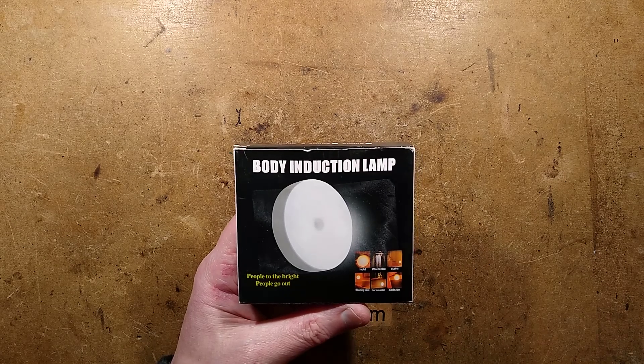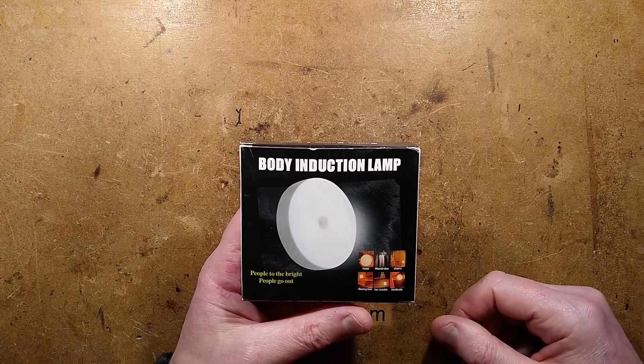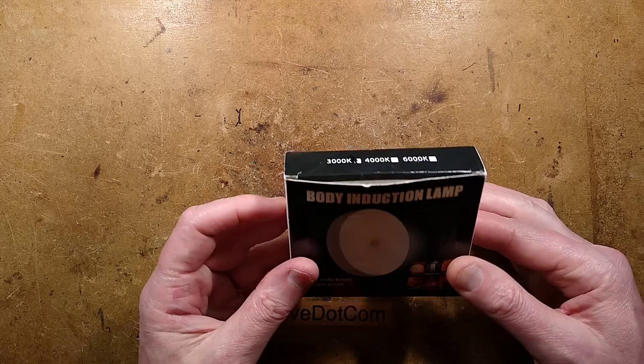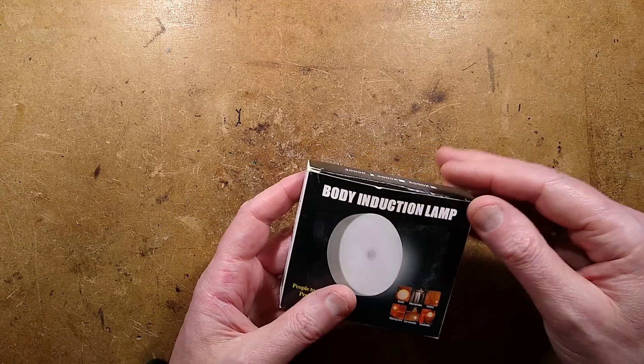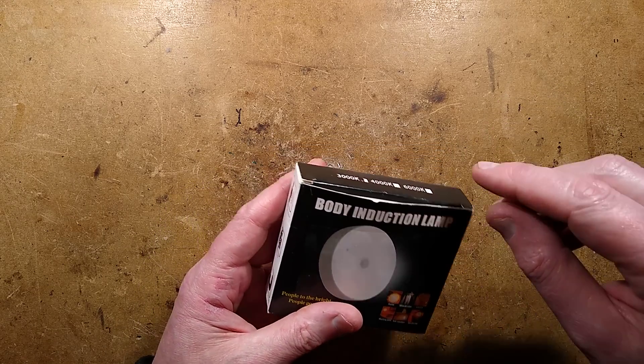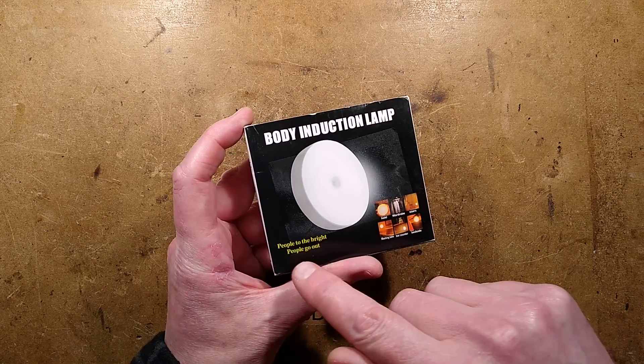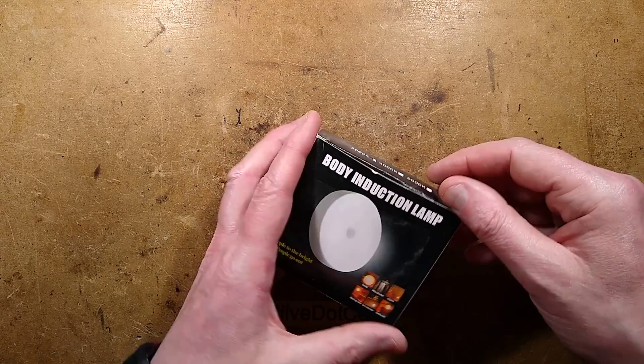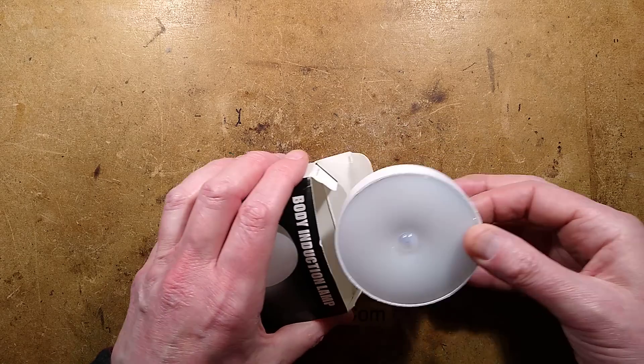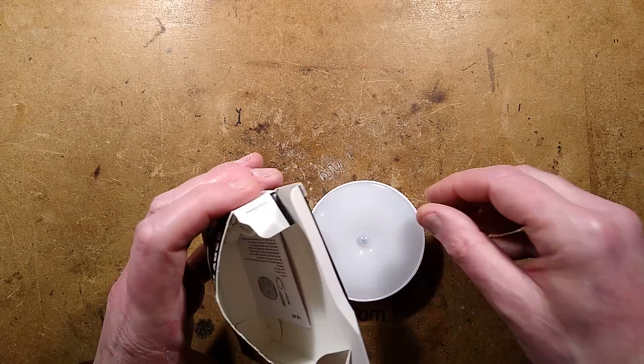It is time for an investigation and a repair, unfortunately, on a brand new product from Temu, but this one is actually faulty and I'll show you the fault. It's a body induction lamp - people come, the light goes bright, people go out. That makes perfect sense. I've looked at one of these before but the circuitry is completely different than this one. It's kind of evolved.